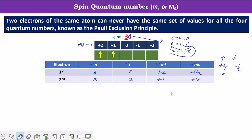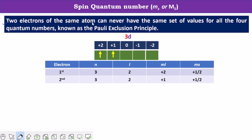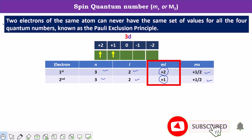In this way we can determine all quantum number values. According to Pauli's exclusion principle, two electrons of the same atom can never have the same set of values for all the quantum numbers. As you can see, the first, second, and third quantum number values are the same for both electrons, but the ml values differ — plus 2 and plus 1 — so the values are different. In this way, Pauli's exclusion principle can be verified.